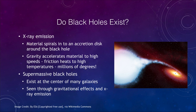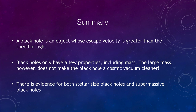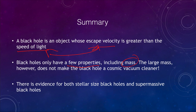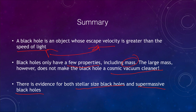So let's finish up with our summary. A black hole is defined as an object whose escape velocity is greater than the speed of light — since nothing can travel faster than light, nothing can escape. They have only a few properties, primarily mass, but that large mass does not make the black hole a cosmic vacuum cleaner. The Sun turning into a black hole would have no impact on the Earth's orbit. There is evidence for both stellar-sized black holes and supermassive black holes, those millions of times the mass of our own Sun. That concludes this lecture on black holes — have a great day everyone and I will see you in class.